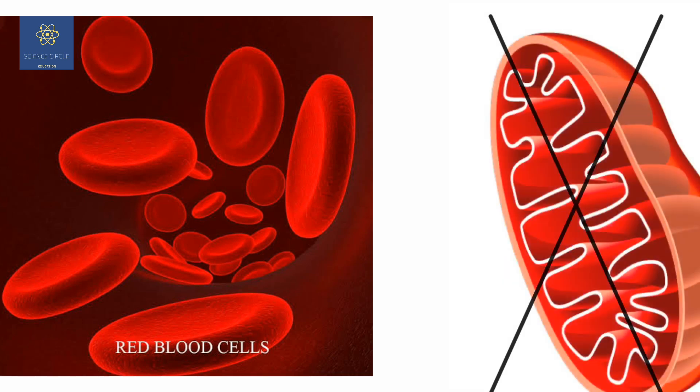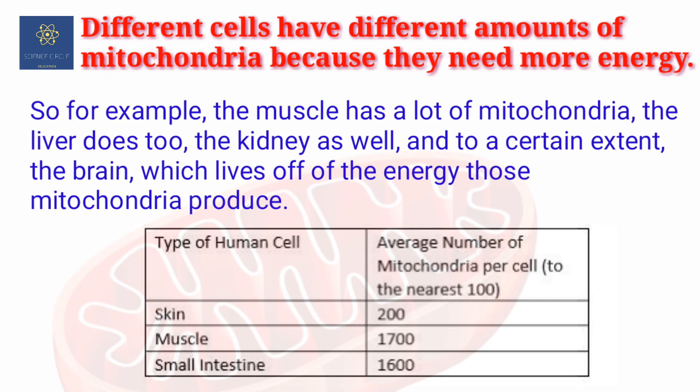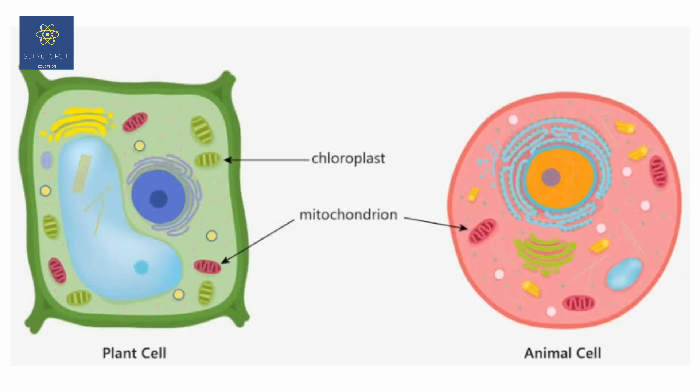The number of mitochondria per cell is variable depending upon the physiological activity of the cell. Mitochondria is an organelle found in the cells of most eukaryotes, such as plants, animals, and fungi.